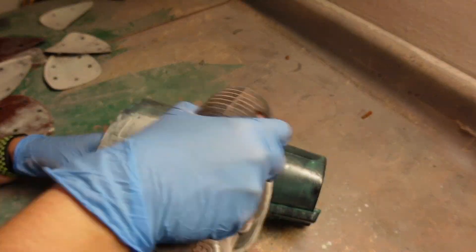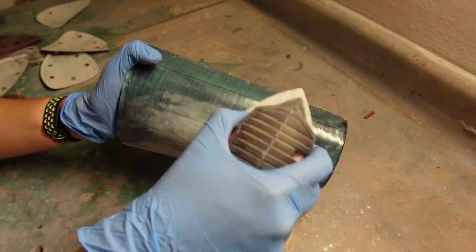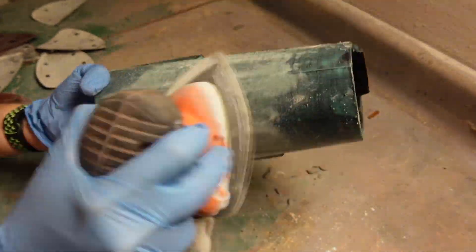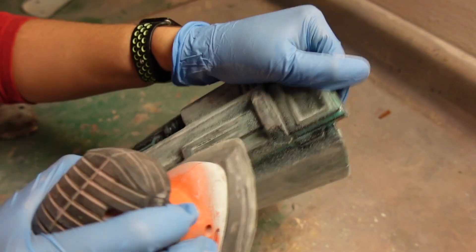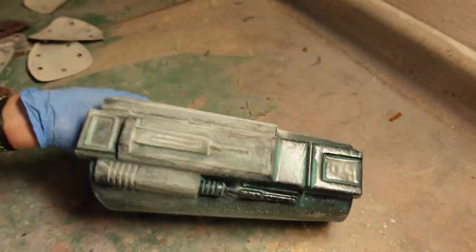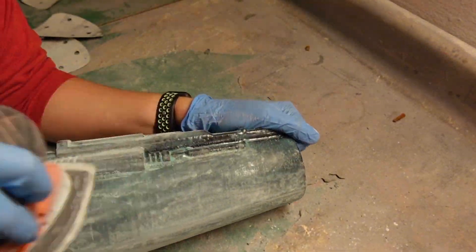I started with 120 grit sandpaper on my mouse sander and sanded both gauntlets down as best as I could. You could probably utilize a Dremel as well to get into some of the harder to reach areas and I ended up doing a little bit of that as well as some hand sanding off camera to get into such areas.